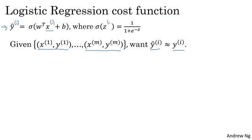You can also define z i as follows, where z i is equal to w transpose x i plus b. Throughout this course, we're going to use this notational convention, that the superscript parentheses i refers to data, be it x or y or z or something else associated with the i-th training example. That's what the superscript i in parentheses means.